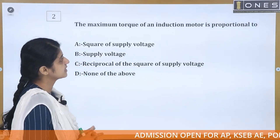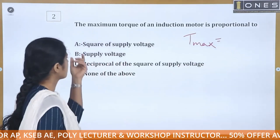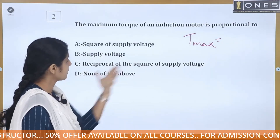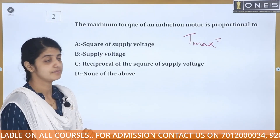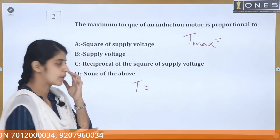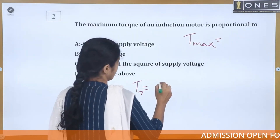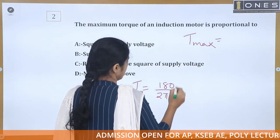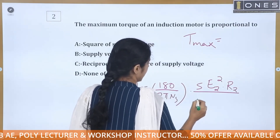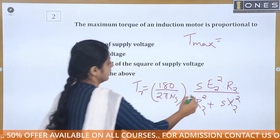Next question: the maximum torque of an induction motor is proportional to which of the following? Options: square of supply voltage, supply voltage, reciprocal of supply voltage, reciprocal of square of supply voltage, or none of the above. To find the answer, we use the running torque equation of an induction motor: T = constant × S × E2² × R2 / (R2² + X2²).